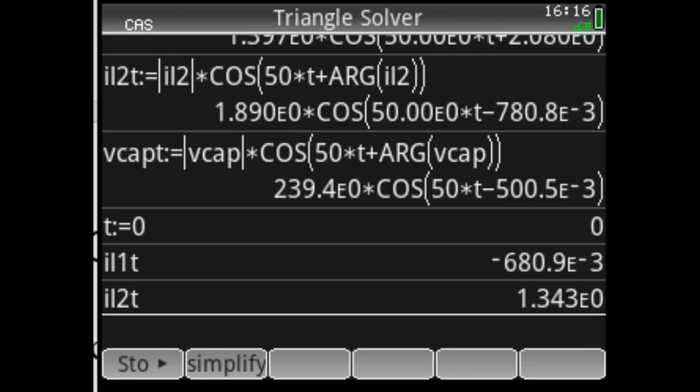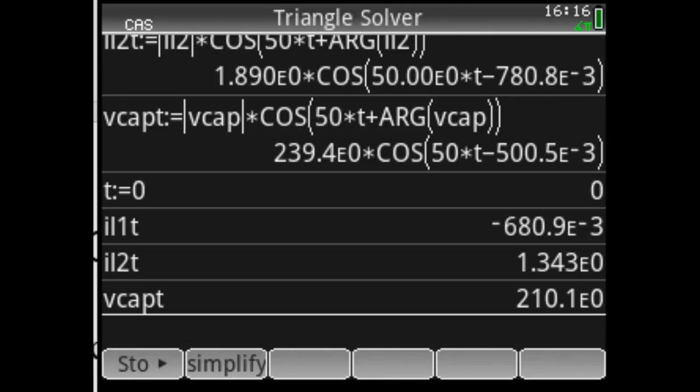And what about IL2 function of time? This is the current from the top to the bottom through the second inductor. At t equals 0, 1.343 amperes is equal to t(0-) and t(0+). What about the voltage in the capacitor? V cap as a function of time is 210.1 volts.